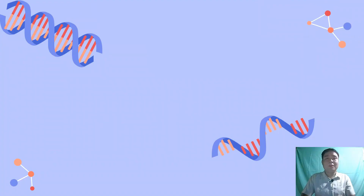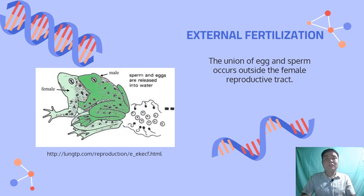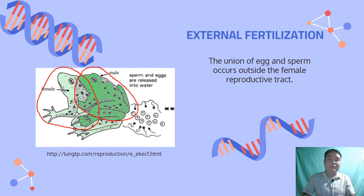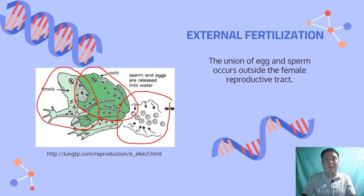The first type of sexual reproduction is external fertilization. External fertilization is the union of egg and sperm cells that occurs outside the female reproductive tract. This is common among most species of bony fish and amphibians. As shown in the illustration, the clasping of the male frog induces the female frog, which is larger than the male, to release eggs over which the male releases its sperm, and fertilization happens outside.